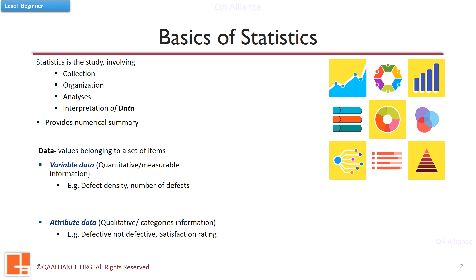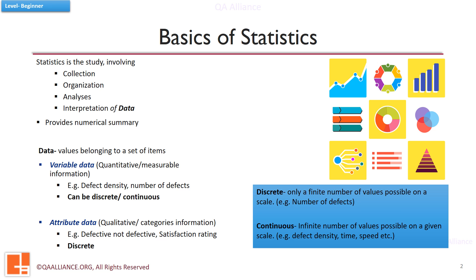For example, attributes for a product can be defective and not defective, while variables can be in terms of number of defects, defect density, etc. These can be further classified in terms of continuous and discrete data. In case of discrete data, only a finite number of values are possible on a scale.